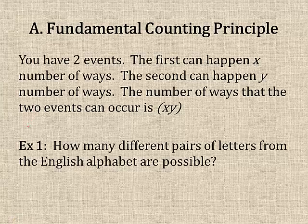You have two events. The first event can happen x number of ways. The second event can happen y number of ways. The number of ways that the two events can occur is x times y. There's multiple ways they can occur as a pair. So that's the basic rule. How does that play out? Well, let me show you.